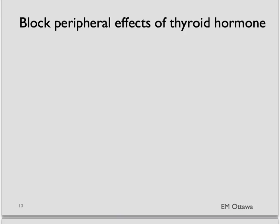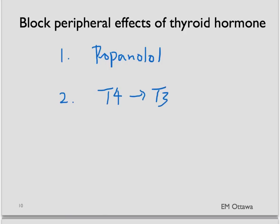The second part is to block the peripheral effects of the thyroid hormone. First, we treat the tachycardia with a beta blocker — the most often used is propranolol. Secondly, we try to inhibit the peripheral conversion of T4 to T3, since T3 is the active form. We do this by giving a dose of glucocorticoid steroids.